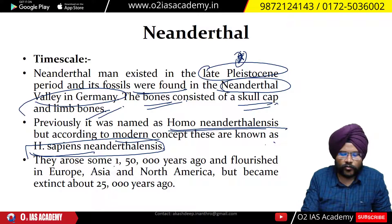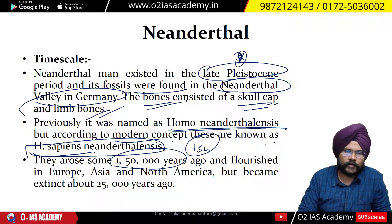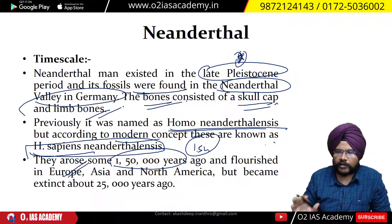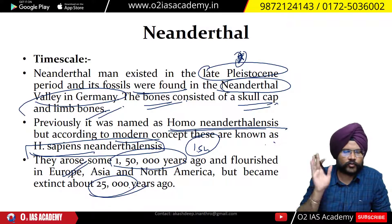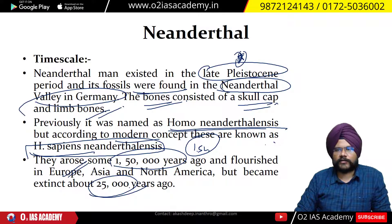They arose about 1.5 lakh years ago. From their origin they spread towards Europe, Asia, and North America. However, 25,000 years ago they became completely extinct. That is how we see the Neanderthal man in the broader picture.